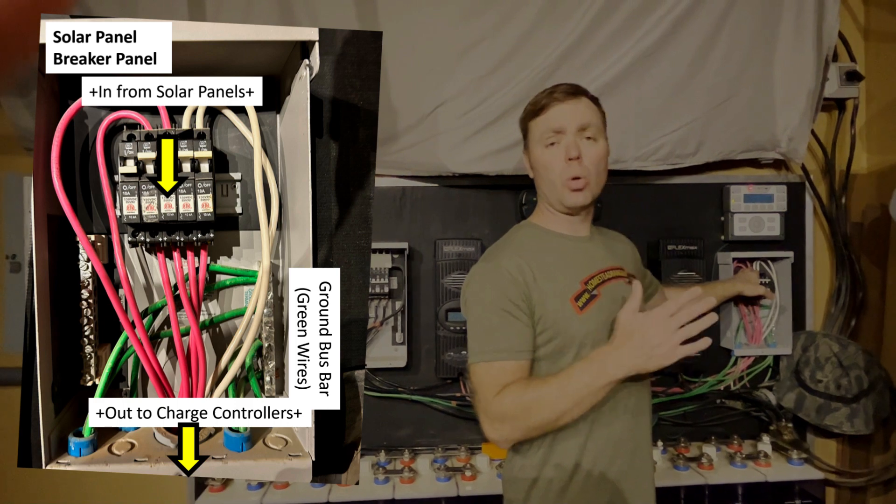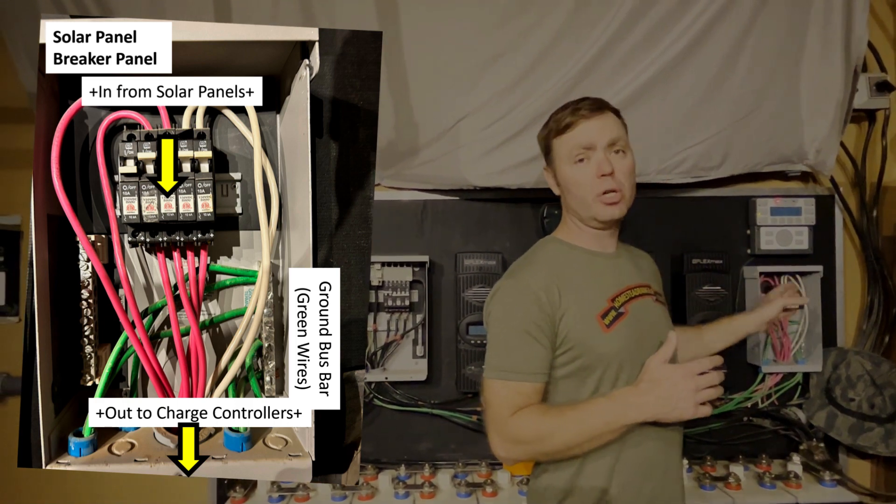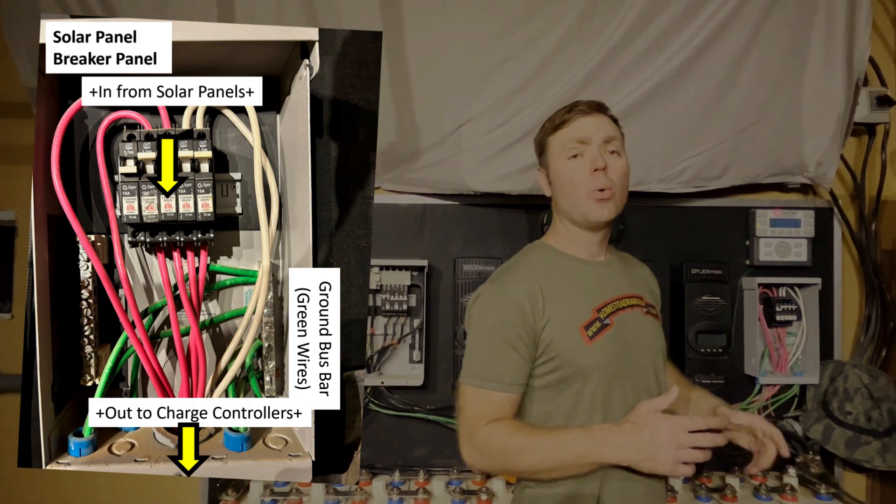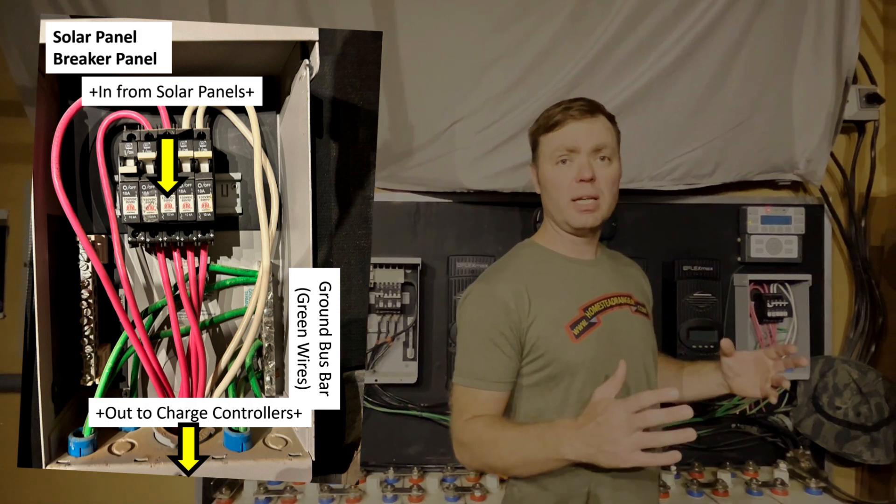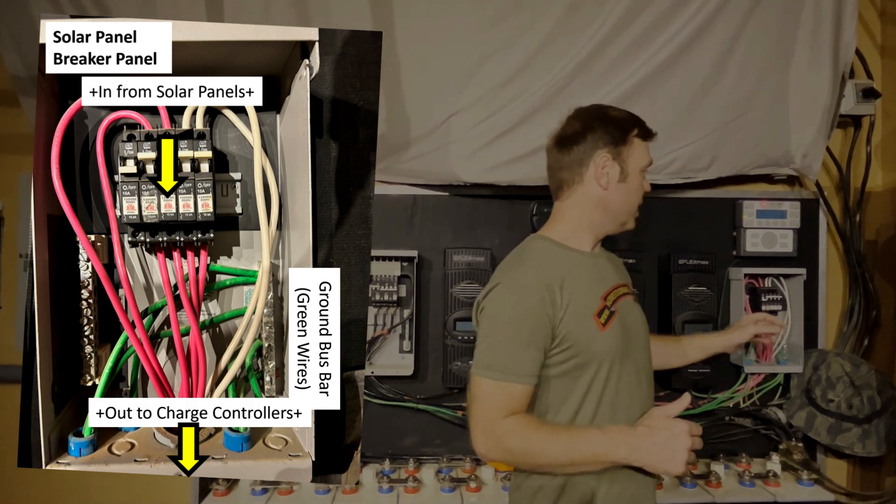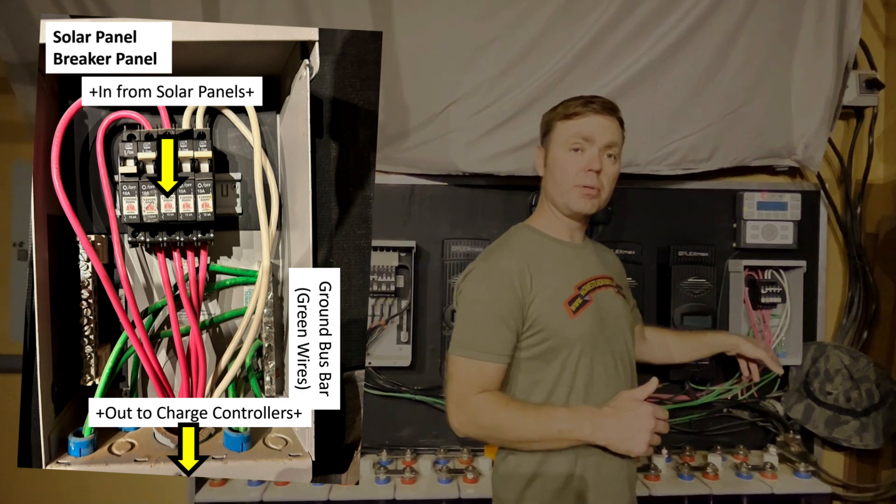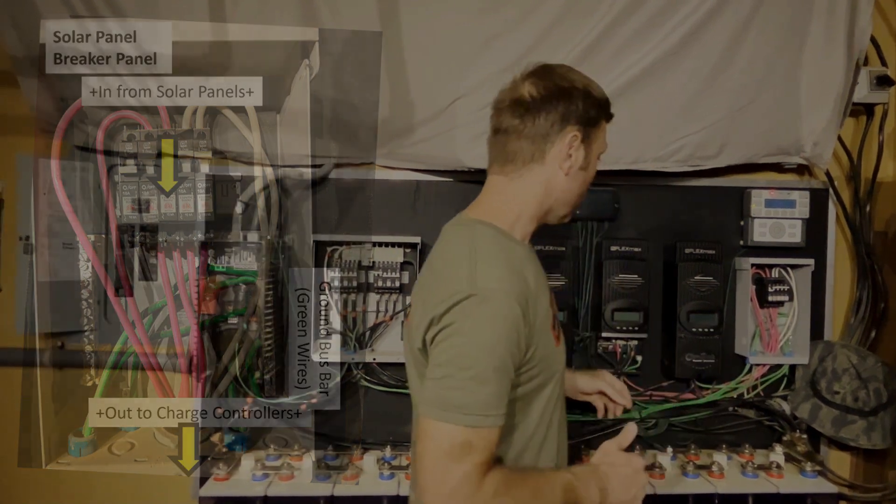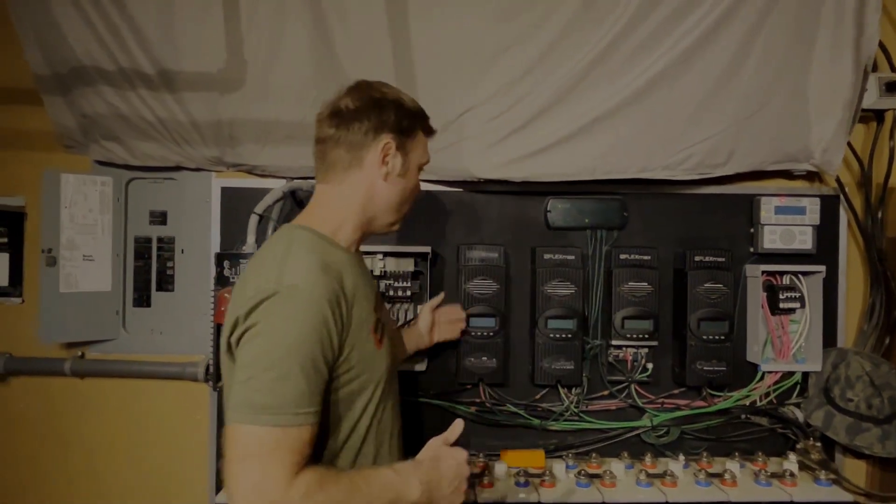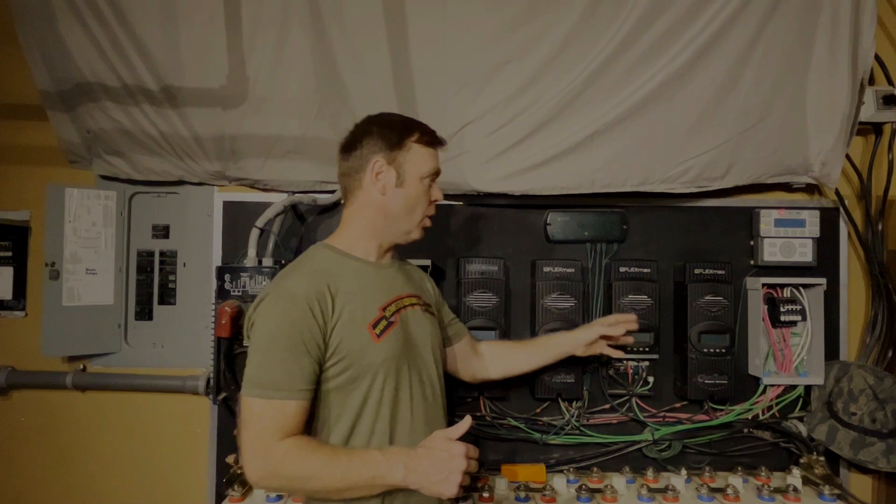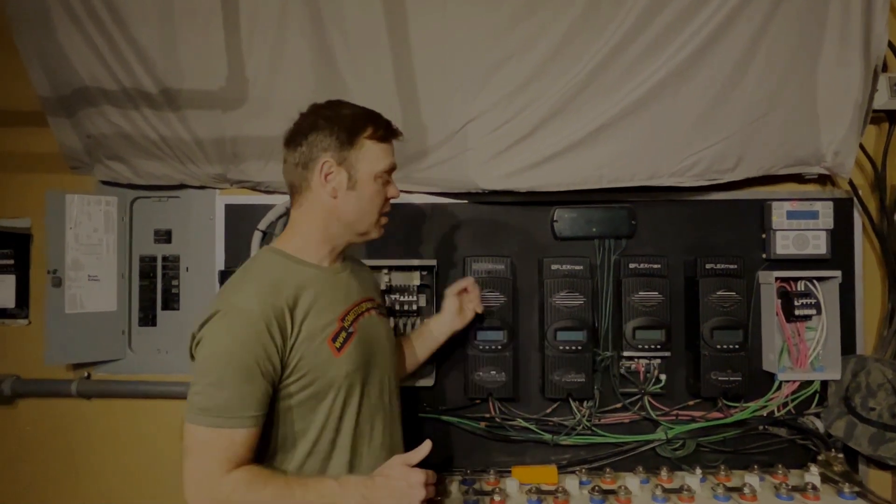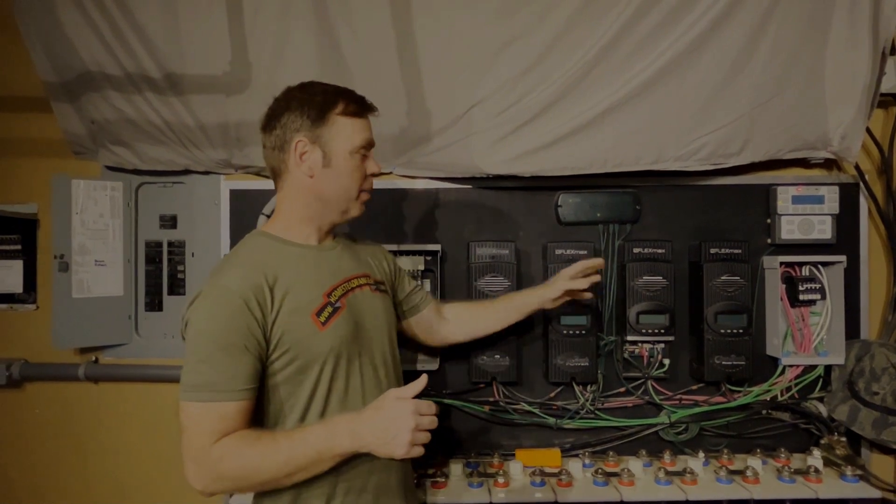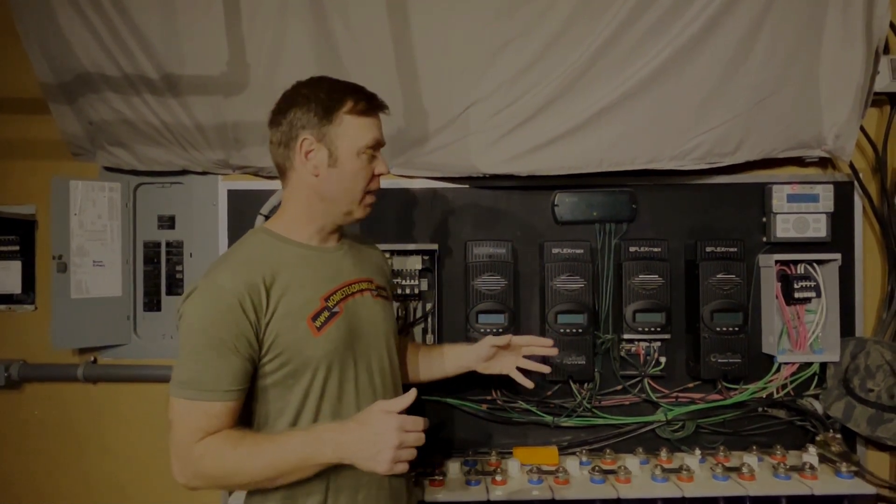Once you've hooked up the solar panel wires to the circuit breaker box, you can turn those off and work on the rest of the system without having to worry about loose electricity. The positive wires go through the breakers, and the negative wires from your solar panels go into each charge controller. I have four charge controllers. These are FlexMax 30, which means they can take 30 amps.